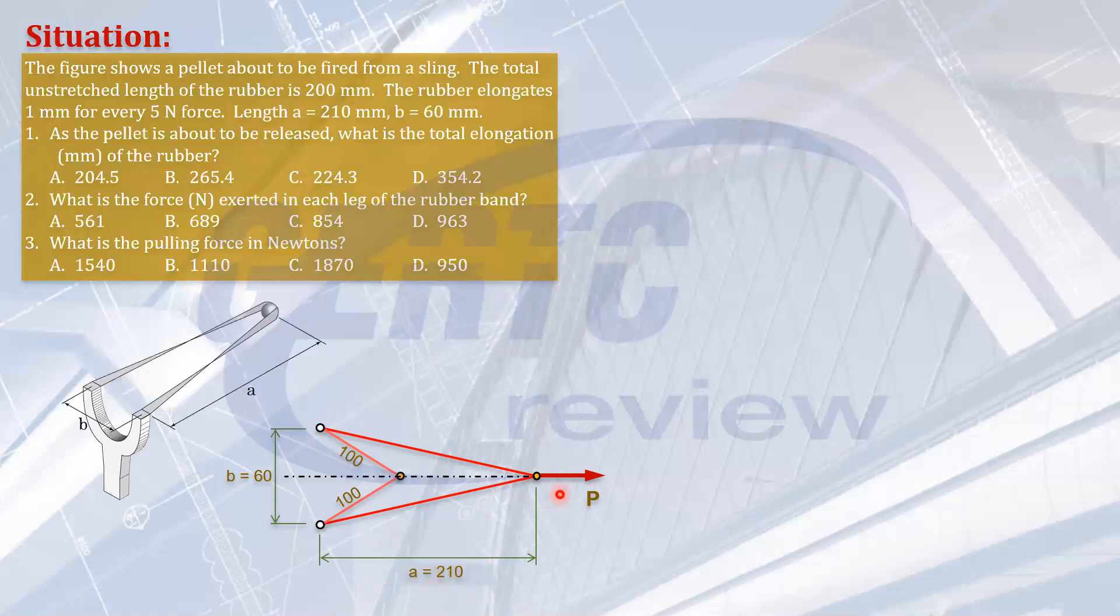So with that position, the length of each side here will be, let's call it L1. By symmetry, they are equal. We can solve L1 by Pythagorean theorem. Look here, a right triangle. L1 being the hypotenuse, this is half of B and this is 210. So by Pythagorean theorem, L1 equals square root of 210 squared plus 30 squared. So the length of each side before it was released is 212.132 millimeters.